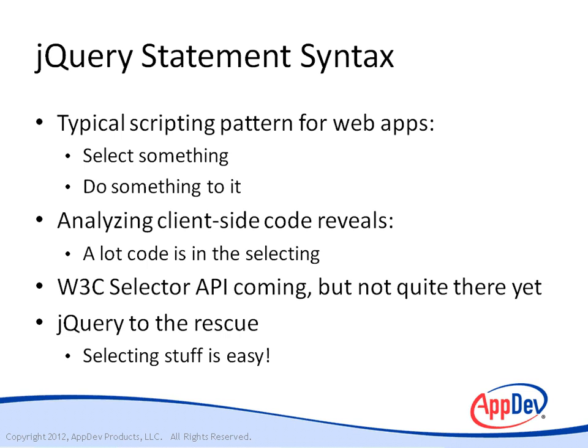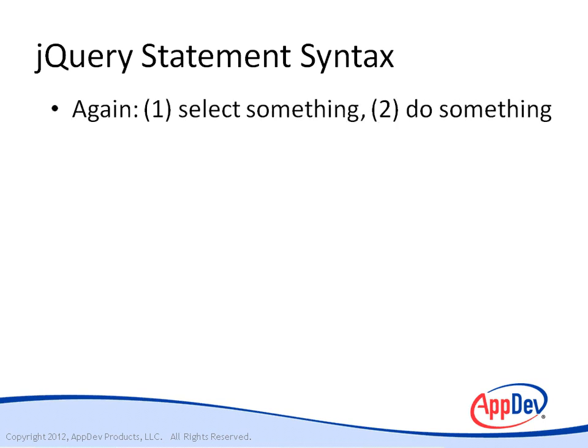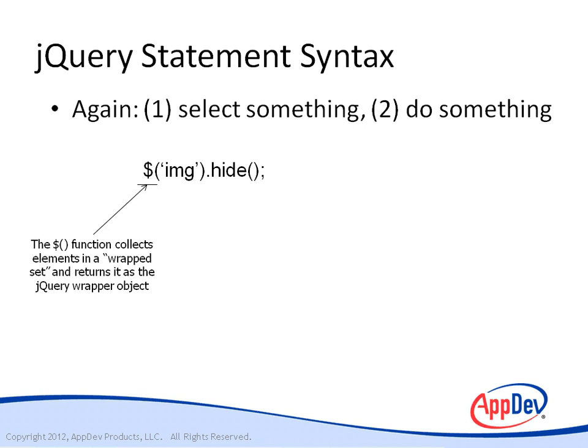That brings us to the syntax of a typical jQuery statement. Remember the typical pattern: select something, then do something to it. The dollar sign is nothing more than the name of the jQuery function — yes, the dollar sign is a valid identifier character in JavaScript. It could have been 'Fred' or 'fizzbad' or 'supercalifragilistic,' but for brevity it's just dollar sign. The dollar sign and the name jQuery are aliases for each other.